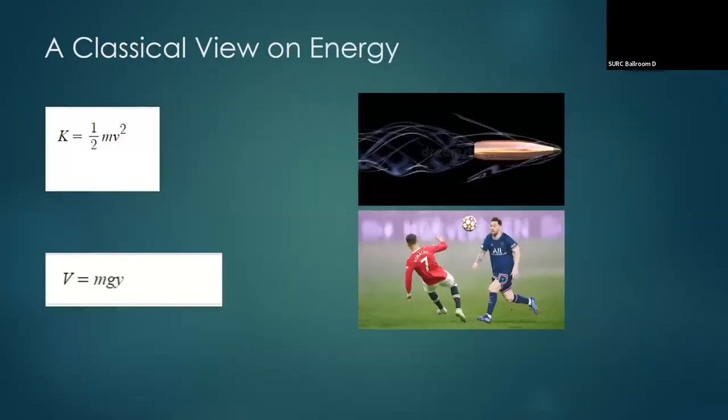Classically, we can model the kinetic energy of a bullet traveling through the air with a formula depending on mass and the square of velocity. We can also model the potential energy of a soccer ball at height above the ground as a function of mass, height, and gravitational acceleration constant near Earth.